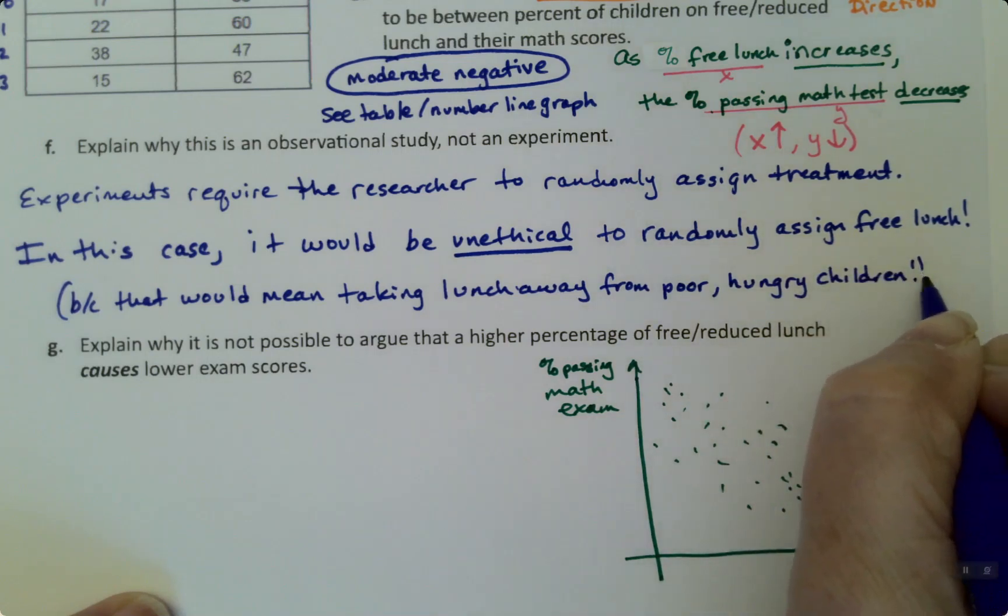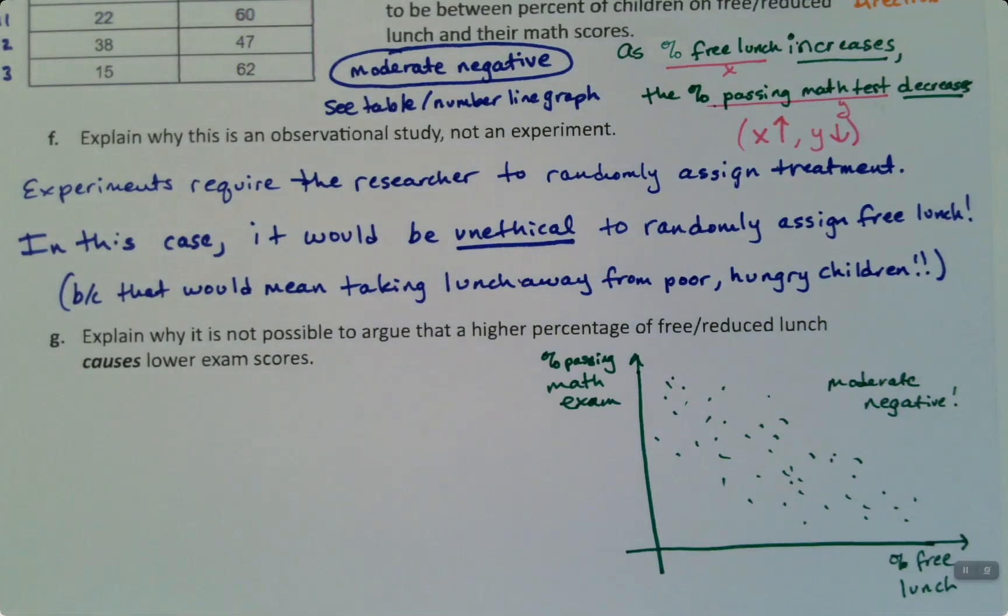And that would be the height of unethical. Well, maybe not the height, but it'd be on the ladder of unethical things to do. So that's why this can't be an experiment. An experiment requires the researcher to say you get free lunch, you don't get free lunch randomly, and that means that some hungry children would have their free lunches taken away from them, and that would not be ethical.